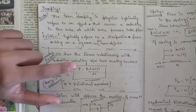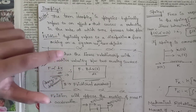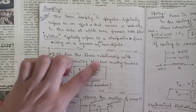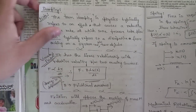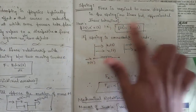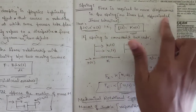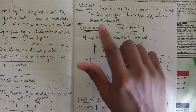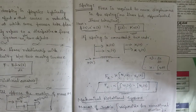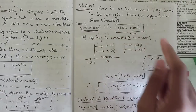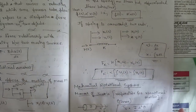For damping — viscous friction — there is a linear relationship between the relative velocity of two moving surfaces, given as F = B·(dx/dt), where B is the frictional constant. For spring, force is required to cause displacement; force is directly proportional to displacement, given as F(t) = K·x(t), where K is the spring constant.